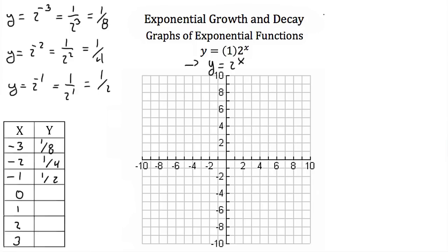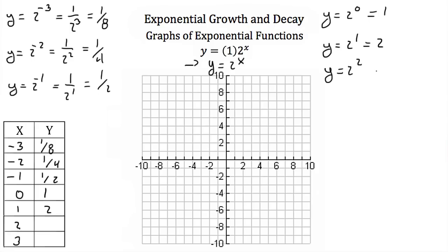Plugging in 0: y is equal to 2 to the zero power. Anything to the zero power is just 1, so y equals 1. Plugging in positive 1: y is equal to 2 to the first power, which is 2. Plugging in 2: y is equal to 2 to the second power; 2 squared is 4. And plugging in 3: y is equal to 2 to the third power, which is 8.